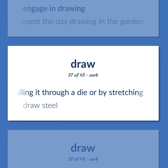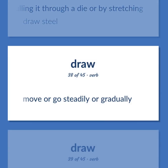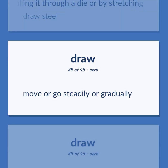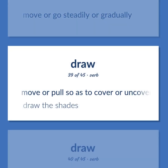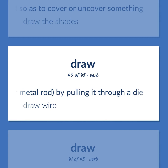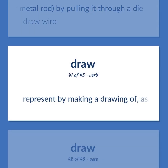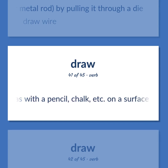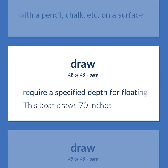Move or go steadily or gradually. Move or pull so as to cover or uncover something. Draw the shades. Reduce the diameter of a wire or metal rod by pulling it through a die. Draw wire. Represent by making a drawing of, as with a pencil, chalk, etc., on a surface. Require a specified depth for floating. This boat draws 70 inches.